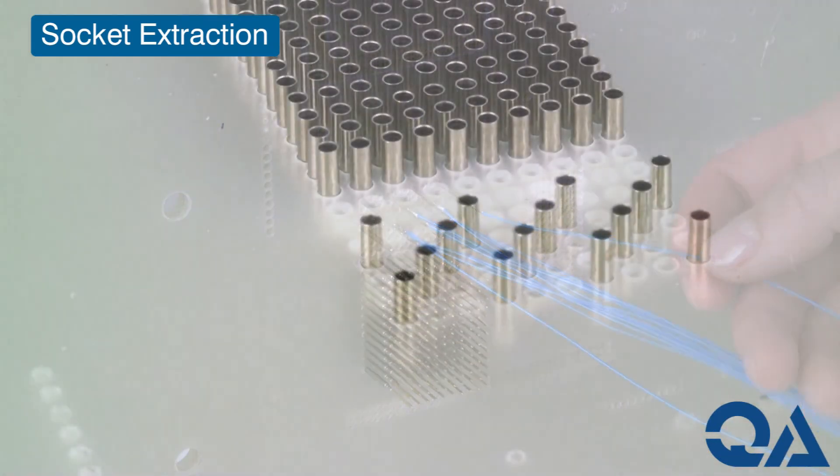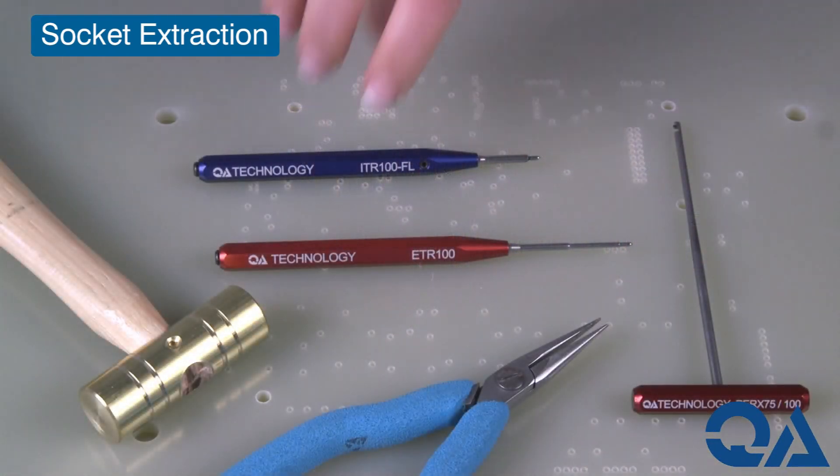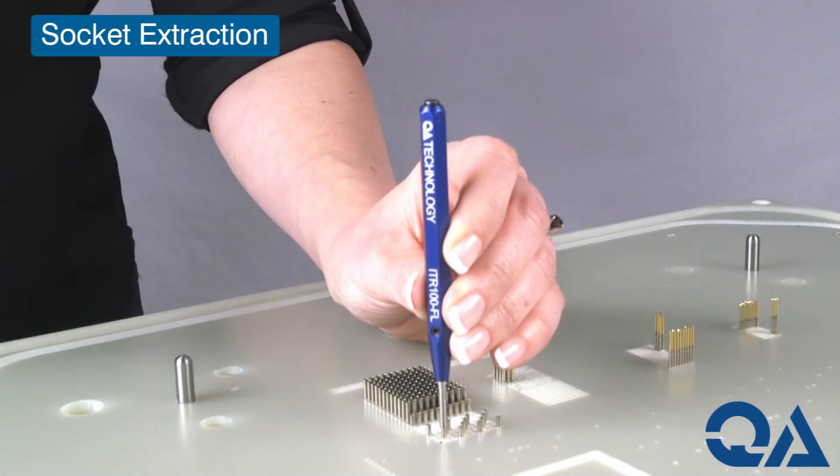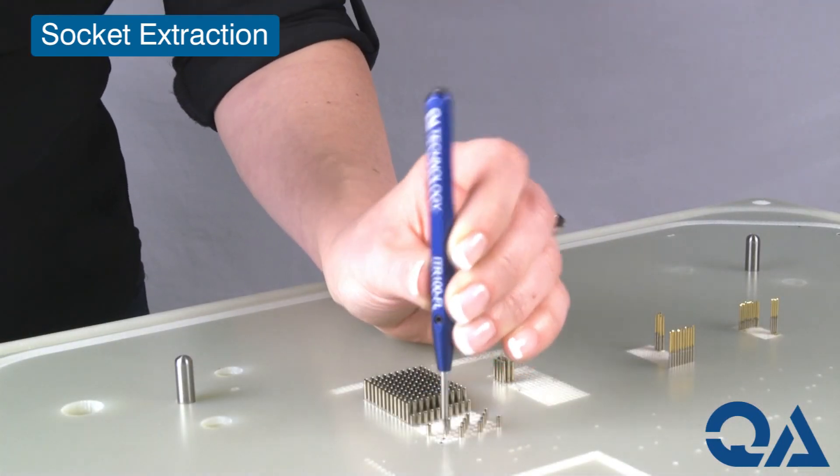We recommend that the socket is set flush to ease extraction. Slide the flush installation tool into the socket and lightly tap until the nose of the tool sits flush with your back plate.